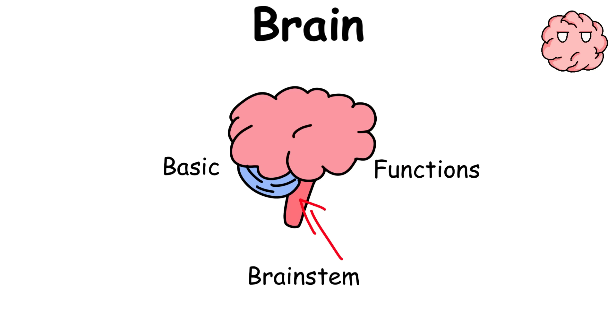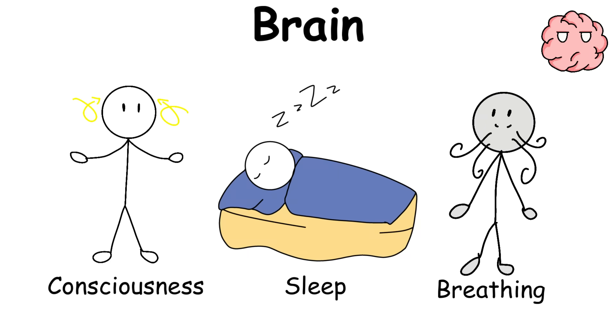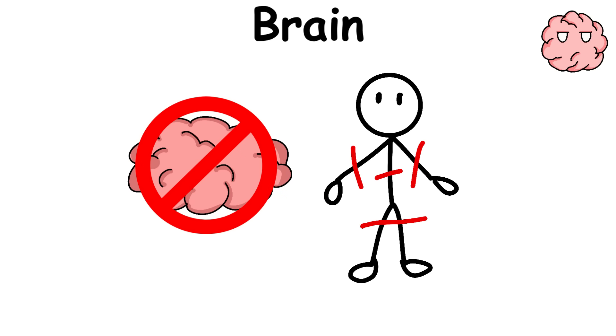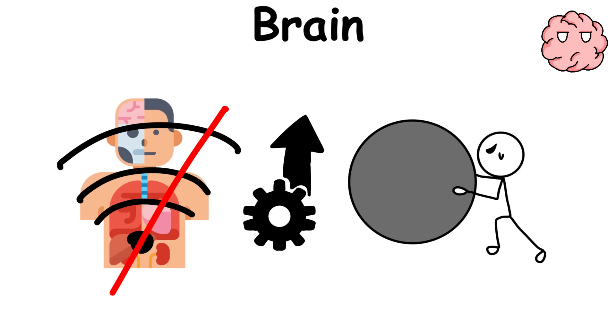The brainstem controls consciousness, breathing, and sleep. Without the brain, the entire body ceases to function because an organ won't send signals to the other systems to make them work. Even something as simple as breathing relies on the brain.